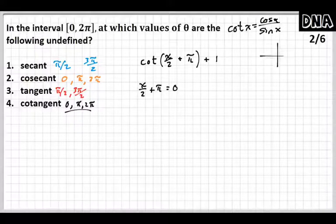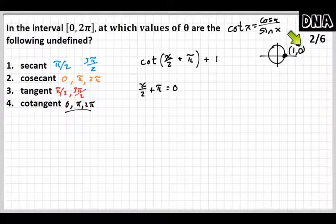And if you're looking at the unit circle right here, the point is 1, 0. Sine is 0. And so if you're dividing by 0, cotangent would be undefined. And so I'm saying, what does x have to be to make this equal to 0?